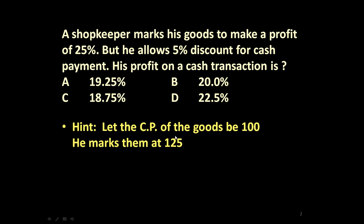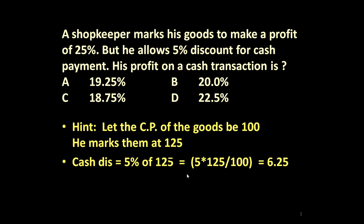The cost price of the article is rupees 100, and he puts a mark of rupees 125 so that he can earn a profit of rupees 25, or 25% profit. Now he allows a 5% discount on the marked price. So the discount is 5% of 125.